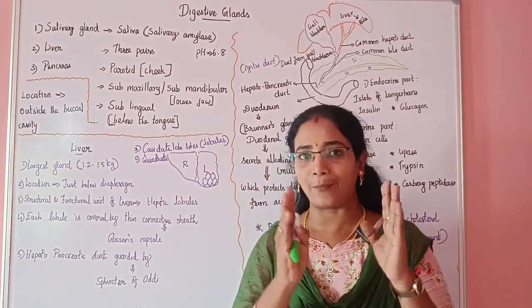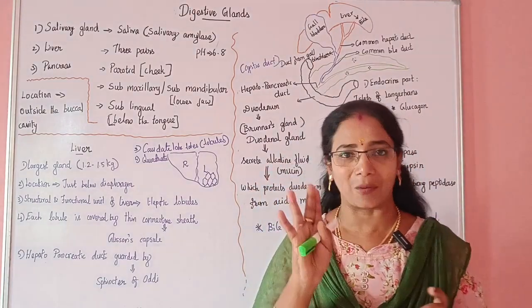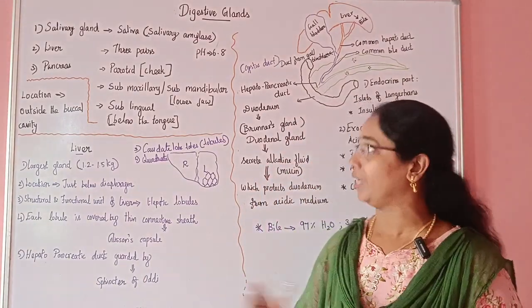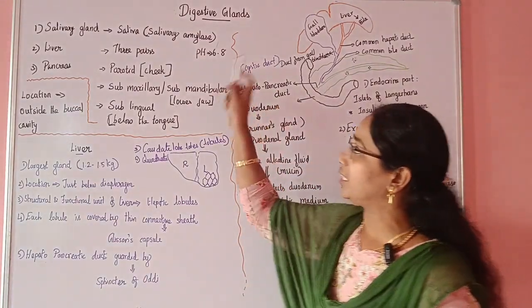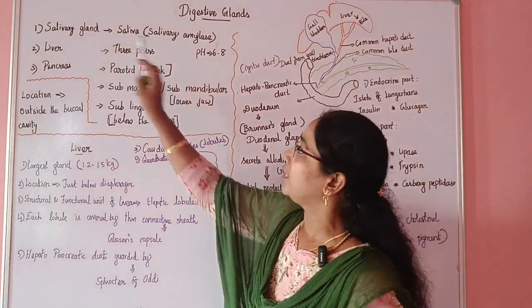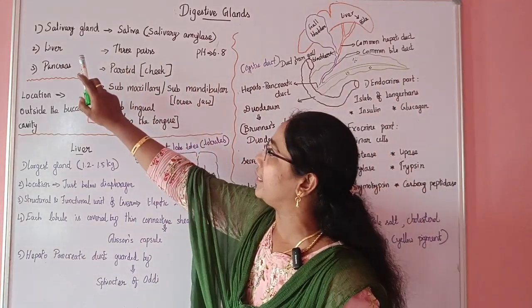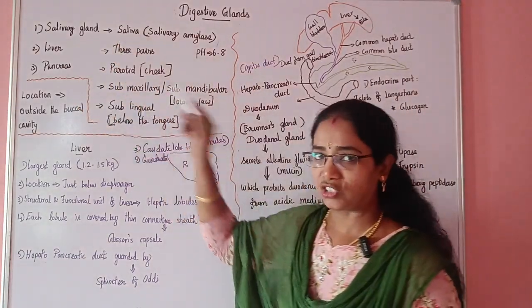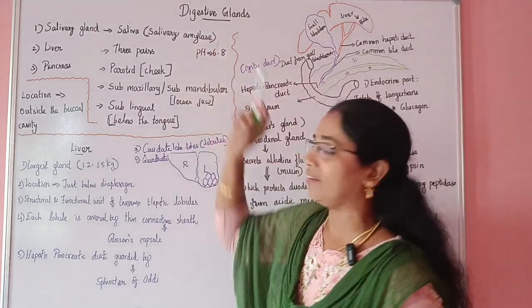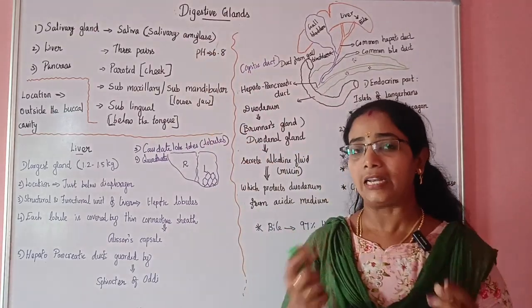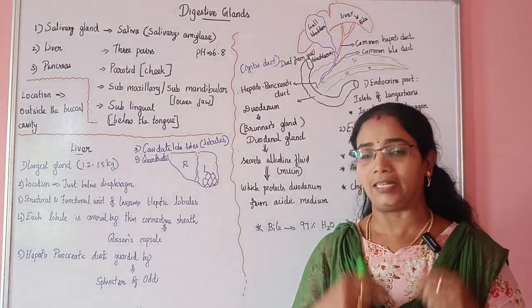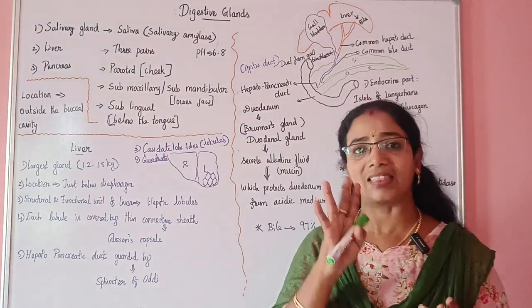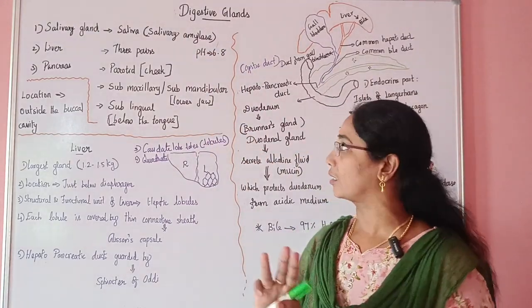Most plant products are carbohydrates. Now, if we look at this, the salivary gland has three parts.